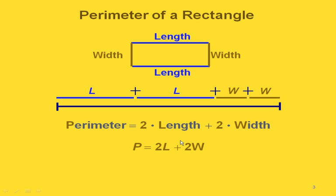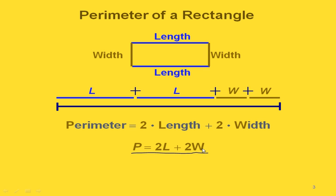First let's look at the perimeter of a rectangle. If we have a rectangle, then we have the length on two sides and the width on the other two sides. To find the perimeter, we measure the distance all the way around the outside. Since we have two lengths and two widths, this gives us the formula: P equals 2L plus 2W, where P stands for perimeter, L for length, and W for width.